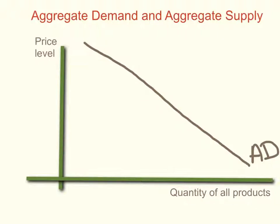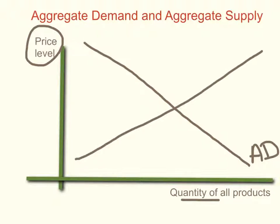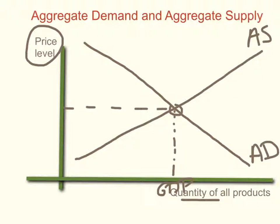Aggregate supply is the same idea — it's the supply curve for all goods and services produced. So we have here on the horizontal axis the quantity of all products. The vertical axis has the price level, so that's the average price level of all goods and services produced. The aggregate supply curve is also upward sloping, just like an individual supply curve. The equilibrium in the economy would then be at this quantity — you can think of that as GDP — so it would be at this particular GDP level, and the average price level would be at the intersection of those two curves.